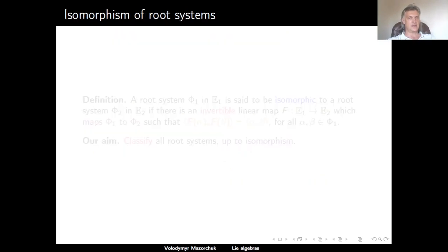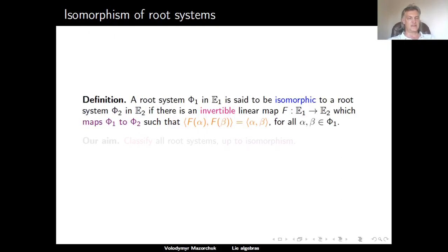Our aim is to classify all simple finite-dimensional Lie algebras, and as a major step there will be a classification of root systems. This classification will be given up to the notion of isomorphism of root systems: a root system phi_1 in E_1 is isomorphic to phi_2 in E_2 if there is an invertible linear map F from E_1 to E_2 mapping phi_1 to phi_2 and preserving the angle bracket between all roots. Our aim, which we hope to accomplish in the next lecture, is to classify all root systems up to isomorphism.